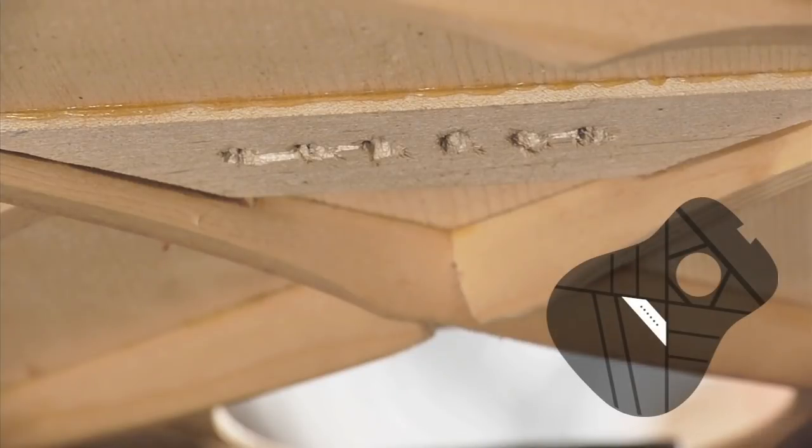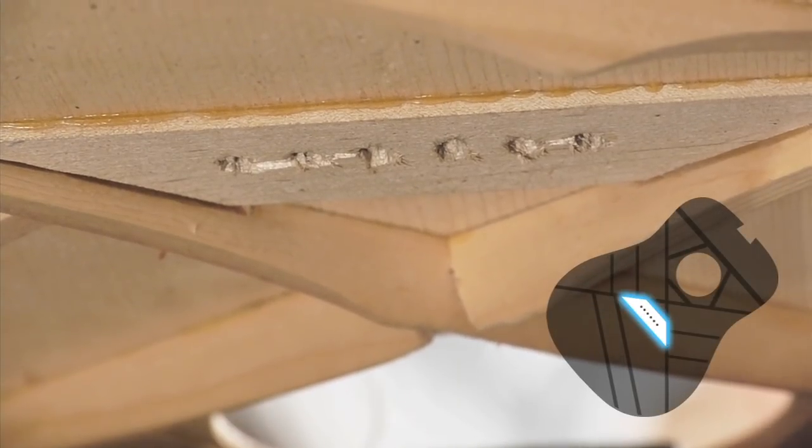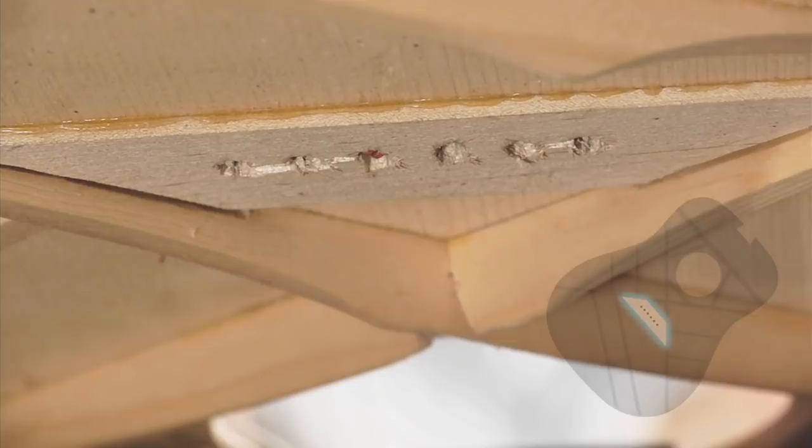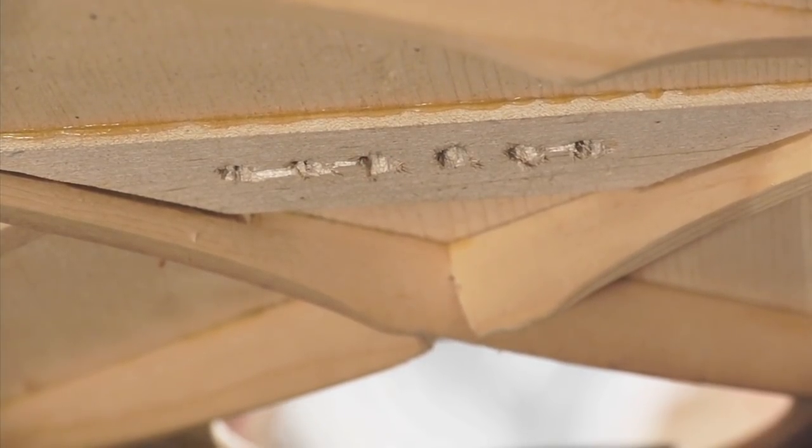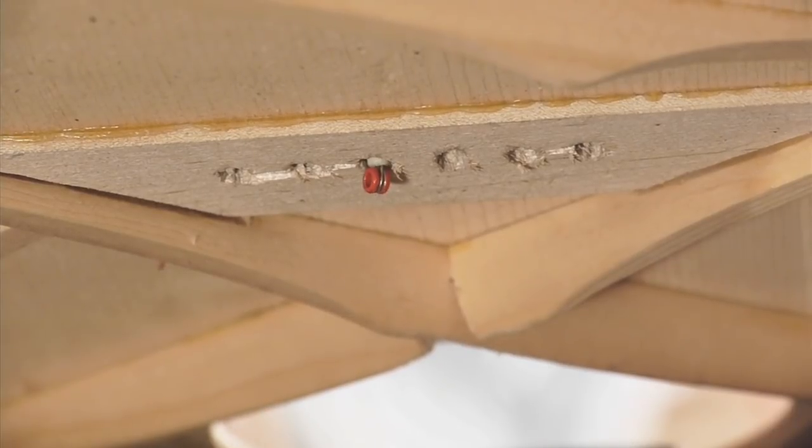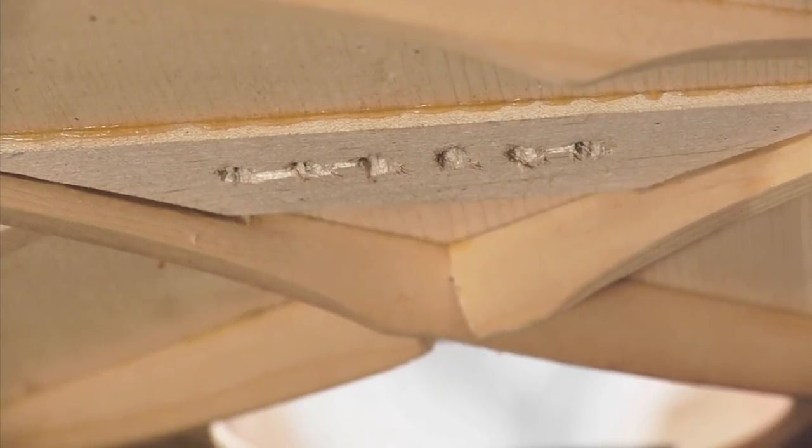You're looking at the bridge plate. Along with the bridge, it's the heart of the guitar. The string ball ends are supposed to seat snugly against the plate and be held there with the bridge pins. These holes were punched out from drilling the bridge pin holes without a backer inside.